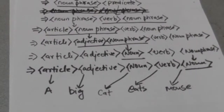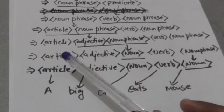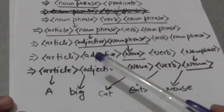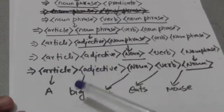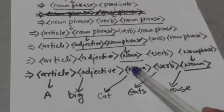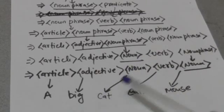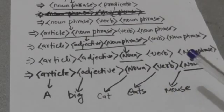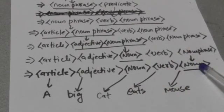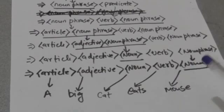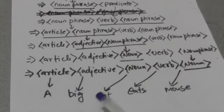We know that an article can be 'a', so I have replaced this article by 'a'. An adjective can be big, small, or good, so I have replaced this adjective by 'big'. Noun can be cat, mouse, or apple, so I have replaced this noun by 'cat'. Verb can be dance, sleep, or eats, so I have replaced this verb by 'eats'. Noun can be mouse, cat, or apple, so I have replaced this noun by 'mouse'. So a sentence of English language has been formed: 'a big cat eats mouse'.